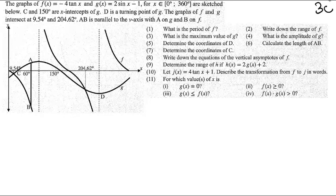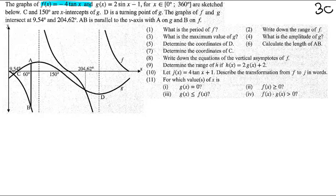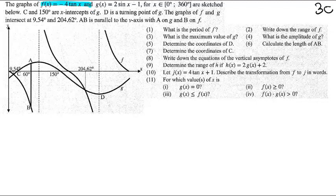This is question 3C and we're still working on trigonometric graphs or functions. First thing they say is that f(x) is negative 4 tan x. We can see it's a negative graph because it's a reflection, right? Instead of going up, it goes down first.